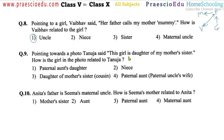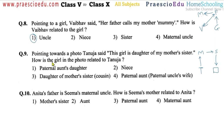Question number nine: pointing to a photo, Tanuja said 'this girl is the daughter of my mother's sister.' Tanuja (T) — her mother (M), mother's sister, and that sister's daughter is the girl in the photo. So the girl is the daughter of Tanuja's mother's sister — meaning she is Tanuja's cousin. Option number three is correct.